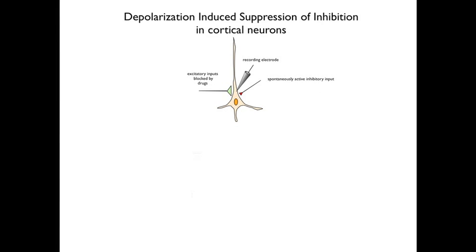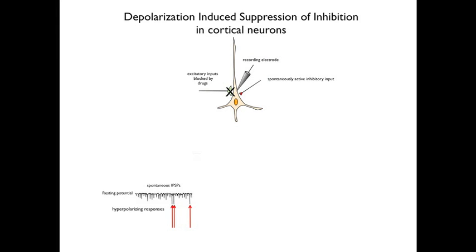Here's the circuit and it's really simple. Recordings are obtained from a neuron in the cerebral cortex with an intracellular electrode — we're going to call this the postsynaptic neuron. There are two inputs to the postsynaptic neuron: an excitatory input and an inhibitory input. However, the cell is bathed in a solution that blocks all of the excitatory synapses, as indicated by the X over the excitatory input. The inhibitory fiber is spontaneously active so that the electrode records randomly occurring inhibitory postsynaptic potentials, or IPSPs, as shown in the bottom trace as brief downward deflections. The three red arrows point to three of the IPSPs.